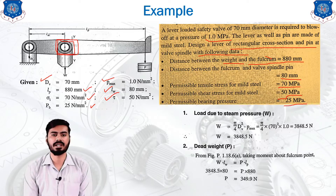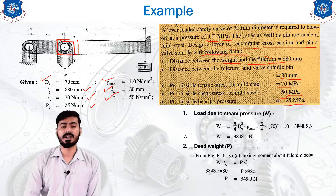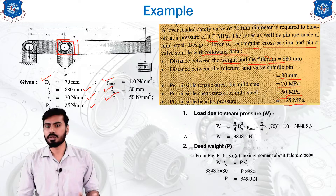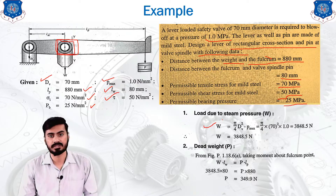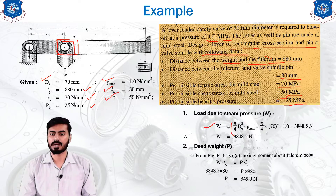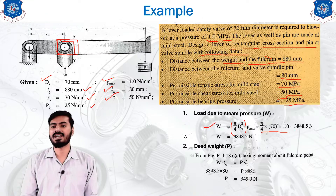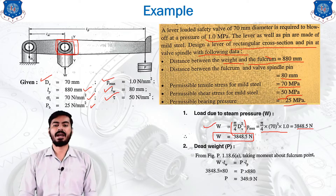Our first step is to calculate the load due to the steam pressure. In this type of lever, the load to be controlled is due to the pressure, so we use the equation W = pressure × area. The diameter of the valve spindle is given, so the area is calculated as pi/4 × d². The result is W = 3848.5 Newton.